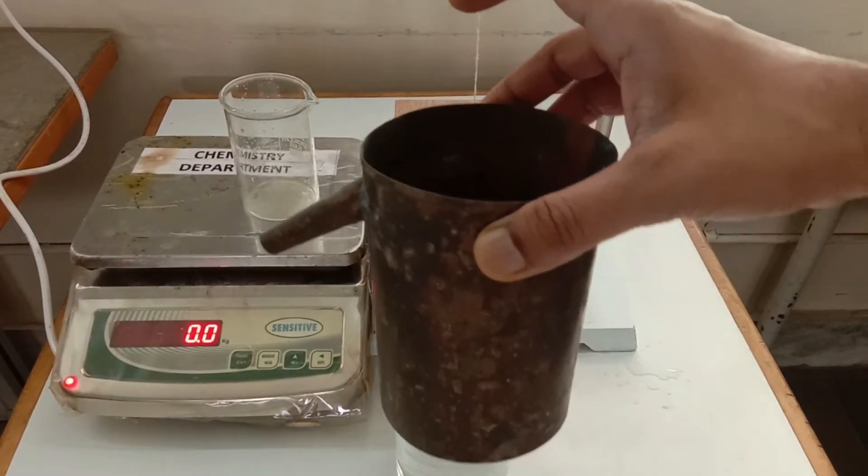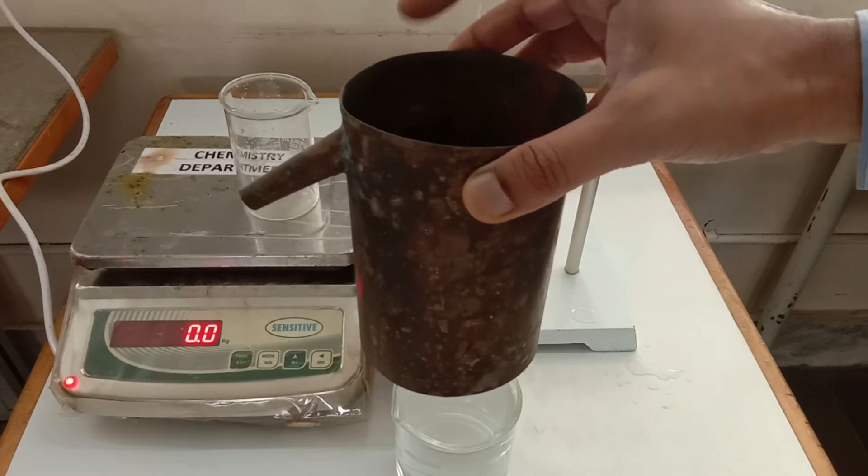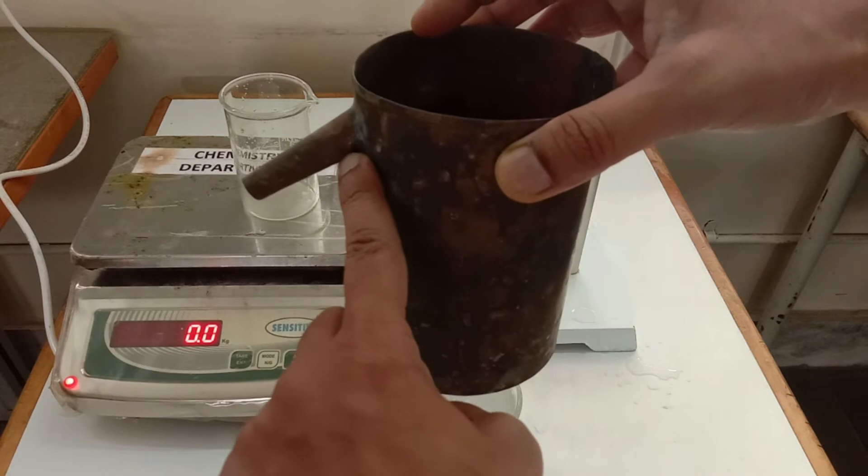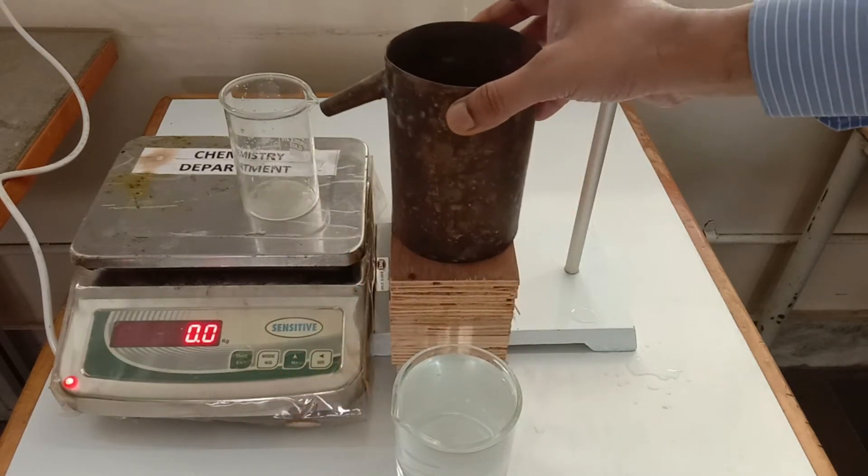This Eureka can is made up of copper, and the pipe-like structure you see is known as a spout. You can fill this Eureka can with any liquid up to here, because if you try to fill it more, the liquid will be displaced out through the spout.